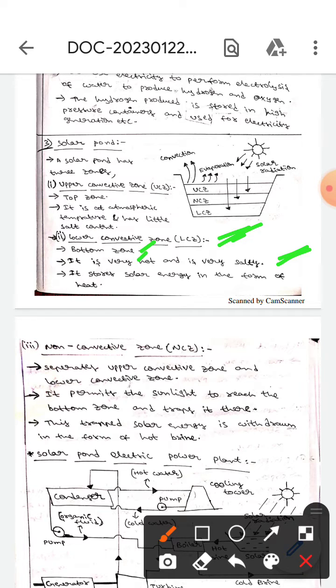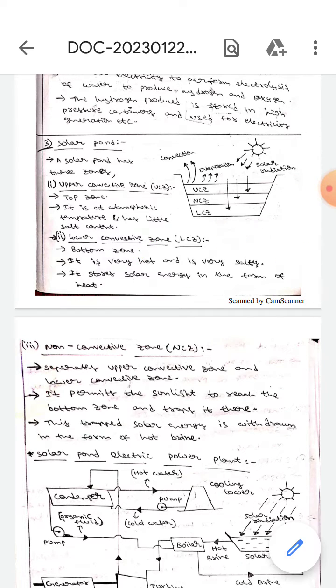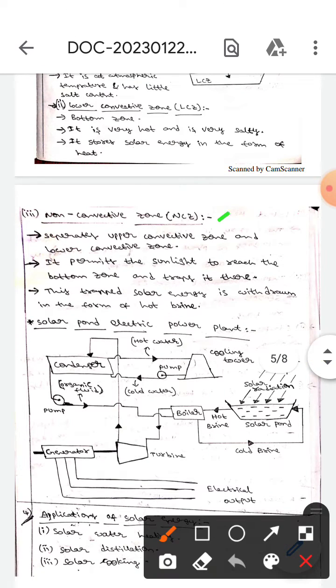Whereas the next one is non-convective zone. Here it separates the upper convective zone and lower convective zone. It permits the sunlight in order to reach the bottom zone and it will trap the sunlight at bottom.